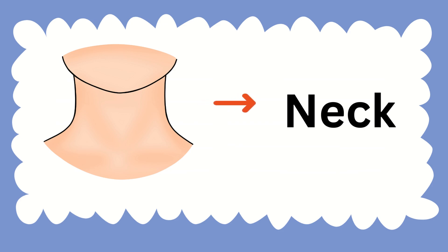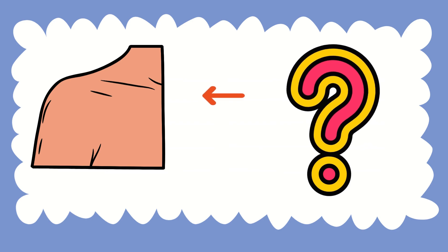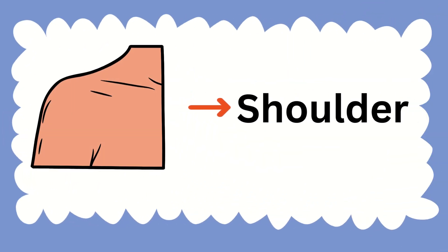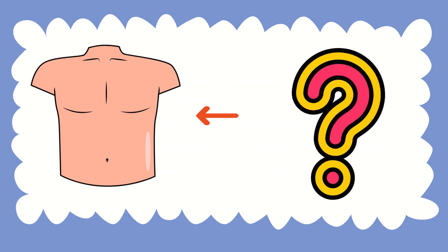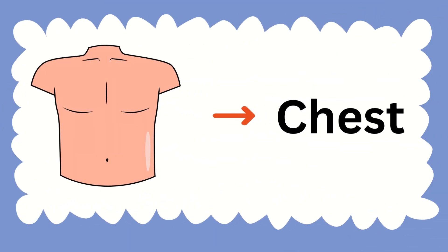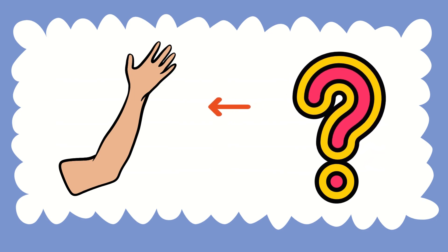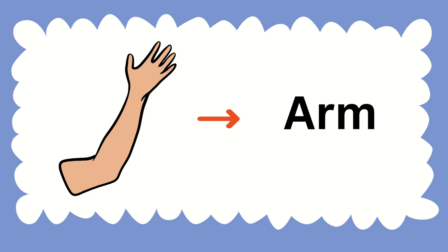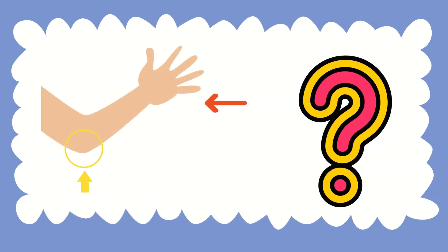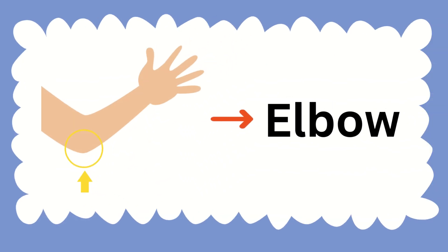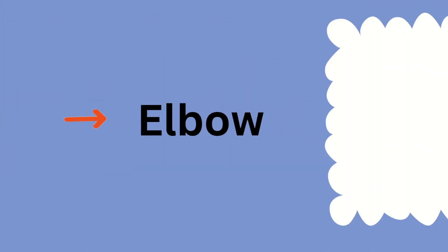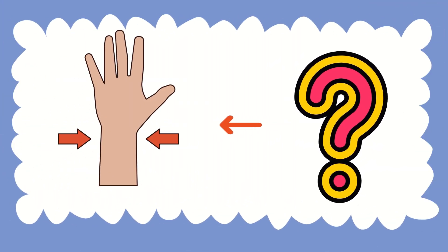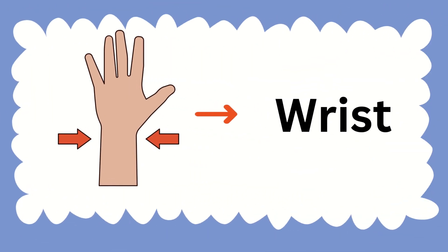Let's see the next body part. This body part is called shoulder. Good job! Can you tell the name of this body part? This is called chest. What about this? This is an arm. What about this part? This is called elbow. What about this part? This is called wrist.